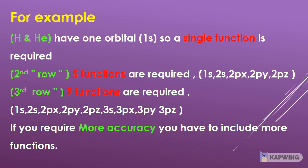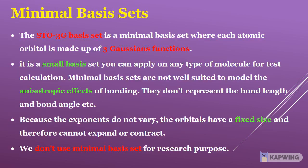Third-row elements require 9 functions, 1 for each occupied orbital. If you require more accuracy, you have to include more functions. The STO-3G basis set is a minimal basis set where each atomic orbital is made up of 3 Gaussian functions. It is a small basis set you can apply to any type of molecule for test calculations. However, minimal basis sets are not well suited to model the anisotropic effects of bonding — they don't accurately represent bond lengths and bond angles because the exponents do not vary, so the orbitals have a fixed size and cannot expand or contract.